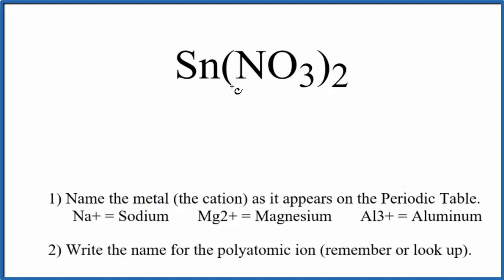First, we'll write the name for tin. Sn is tin, so we'll just write tin. Then, we'll write the name for the polyatomic ion, that's that nitrate there, nitrate, lowercase n, and so far the name we have is tin nitrate.